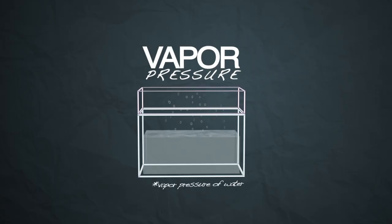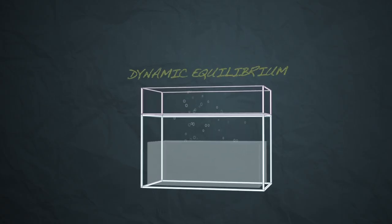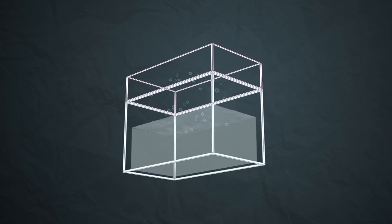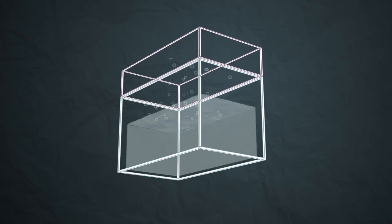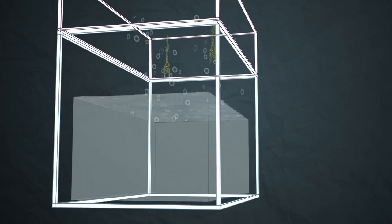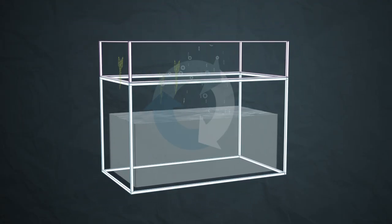It's an example of what we call dynamic equilibrium, meaning when you look at the thing, you can't tell anything's happening, but in actuality, there are billions and billions of molecules leaving the surface of the water and there's also billions and billions reentering at exactly the same rate.